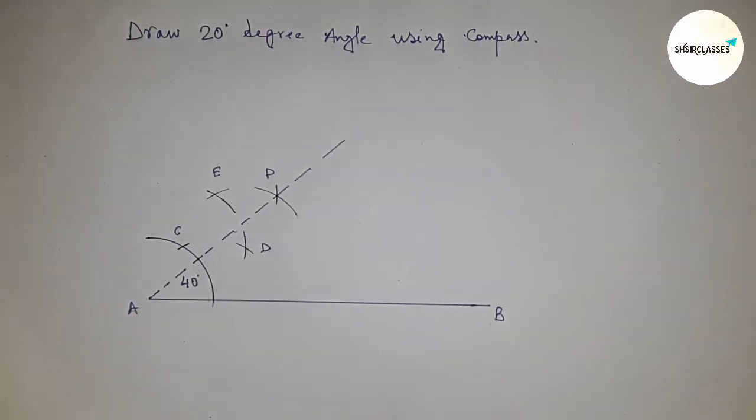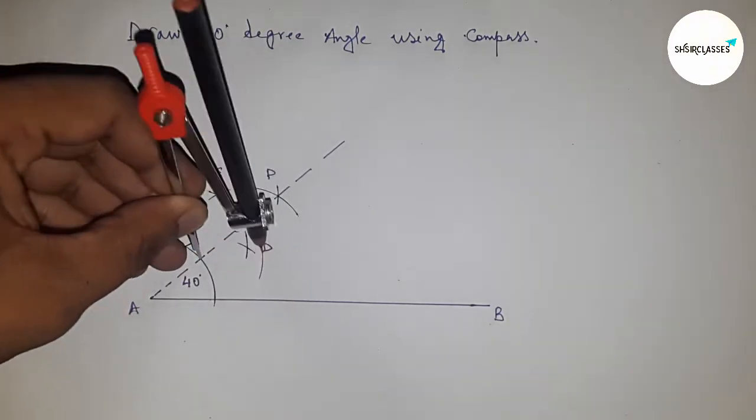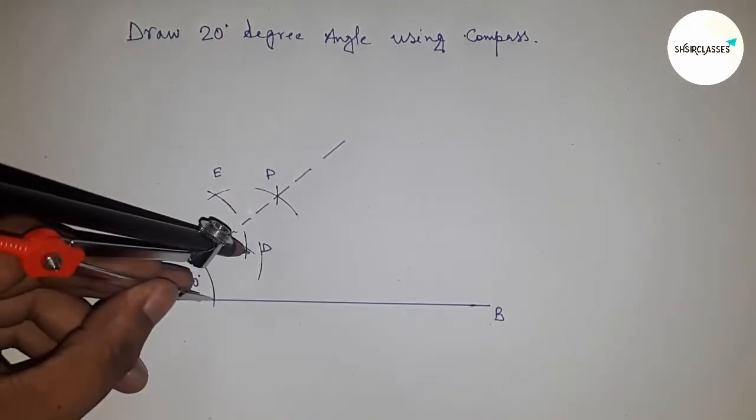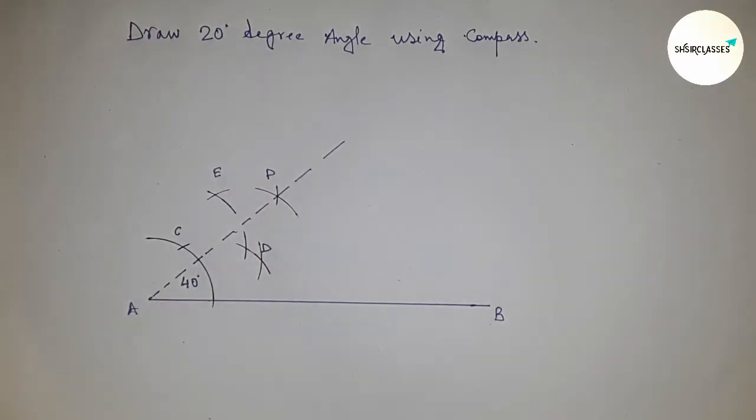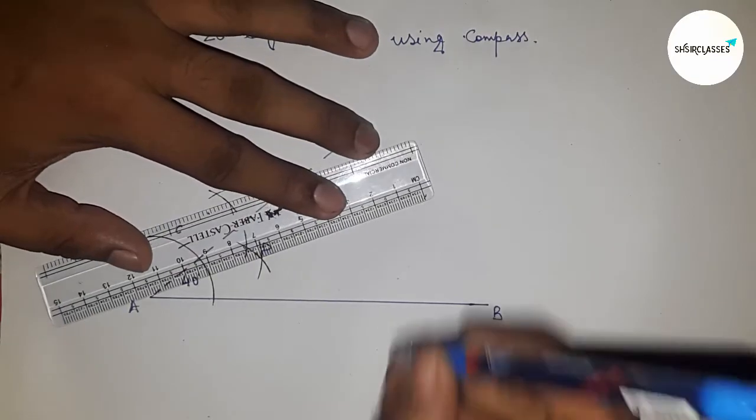So next, bisecting the angle 40 degrees. Taking any length and putting the compass here and drawing an arc with same length, and cut the arc by the arc by this way. Next, joining this to get a 20-degree angle.